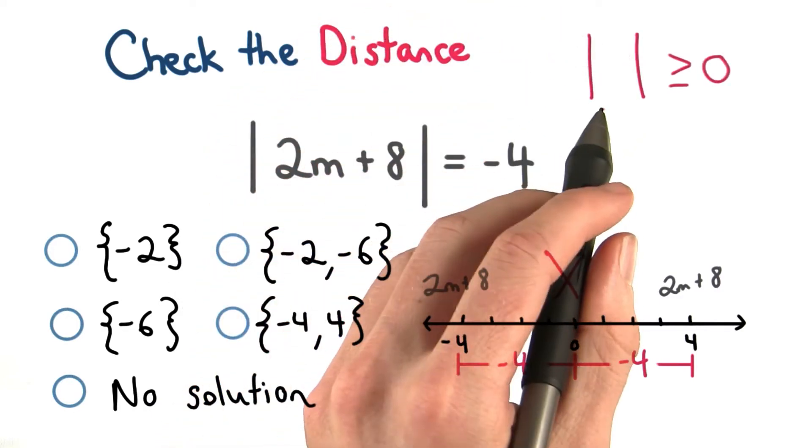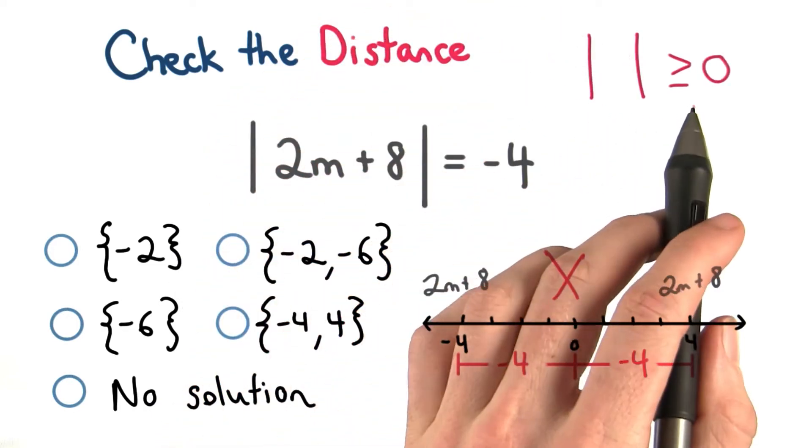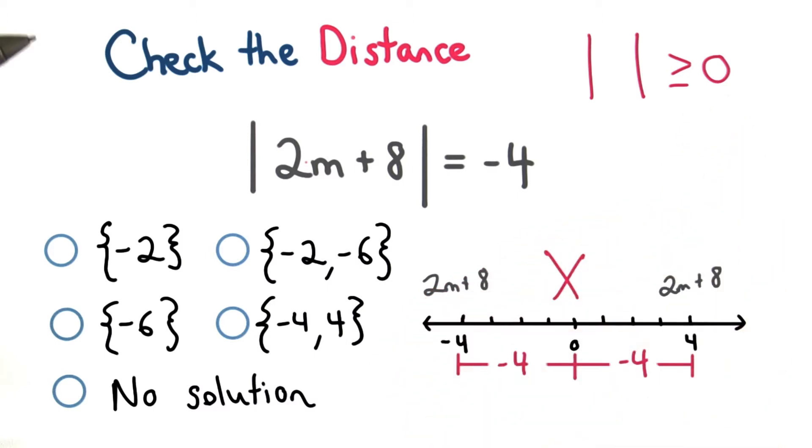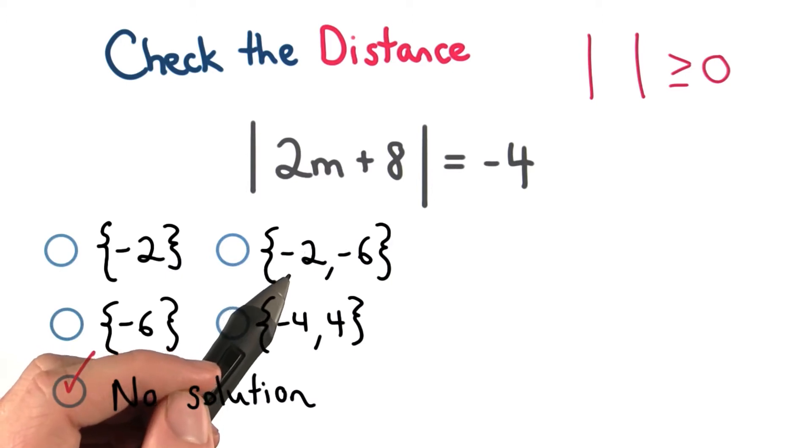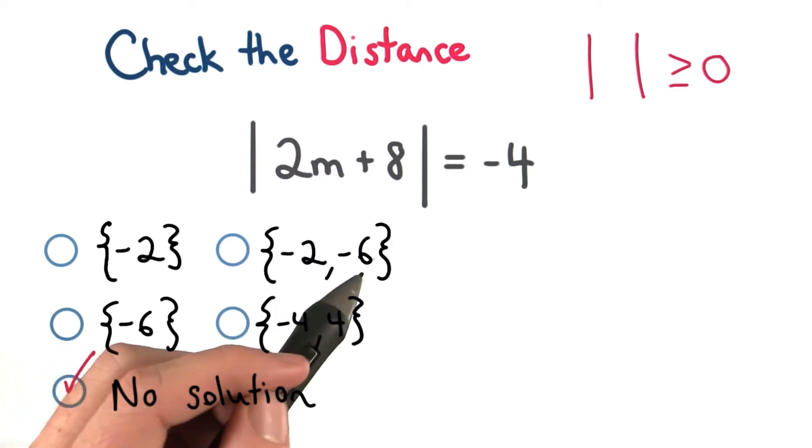The absolute value of any expression or number is always greater than or equal to 0. So, there's no value of m that can make this true. There's no solution. If you were solving the equations like before, you might have thought it was negative 2 and negative 6.